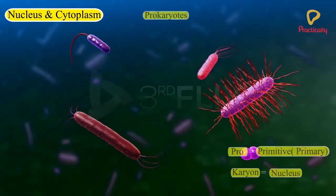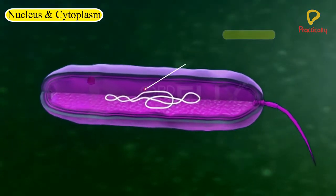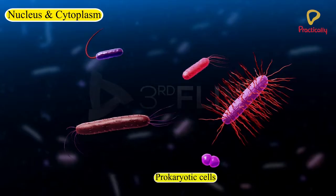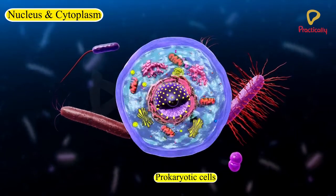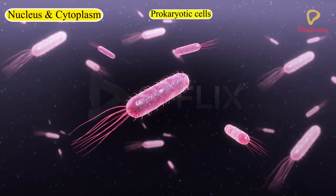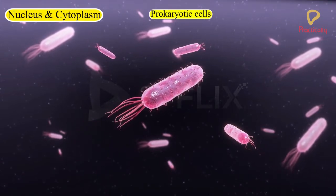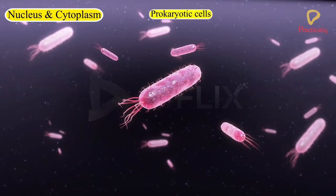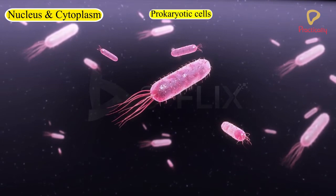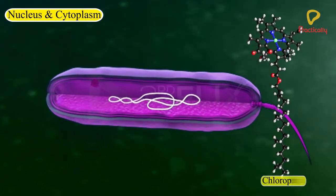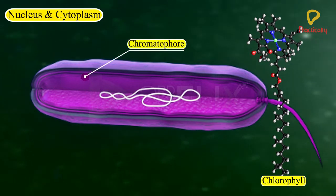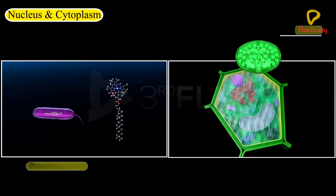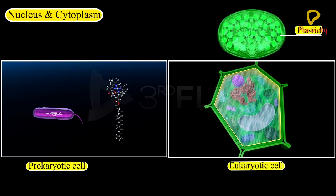Prokaryotic cells also lack most of the other cytoplasmic organelles present in eukaryotic cells. Many of the functions of such organelles are also performed by poorly organised parts of the cytoplasm. The chlorophyll in photosynthetic prokaryotic bacteria is associated with membranous vesicles — bag-like structures — but not with plastids, as in eukaryotic cells.